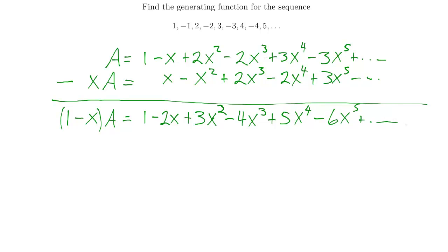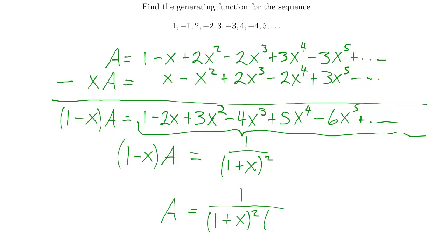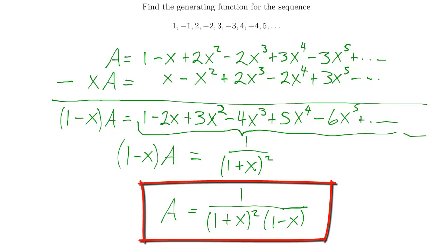Let's see what we can do with this. This sequence is just like 1, 2, 3, 4, 5, only with alternating signs. Without alternation it would be 1 over (1 minus x) squared. To make every other term negative, I replace x with negative x: (1 minus negative x) becomes (1 plus x). So the whole infinite polynomial reduces to 1 over (1 plus x) squared. This equals (1 minus x) times A, so solving for A gives A equals 1 over (1 plus x) squared times (1 minus x). That's the generating function.